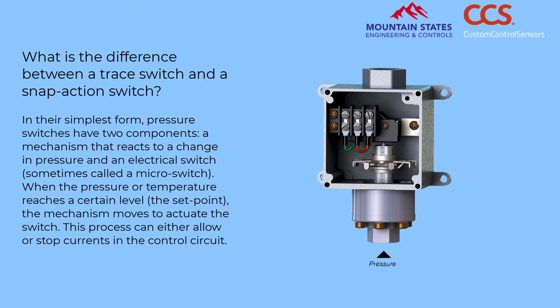What is the difference between a trace switch and a snap action switch? In their simplest form, pressure switches have two components: a mechanism that reacts to a change in pressure and an electrical switch, sometimes called a micro switch. When the pressure or temperature reaches a certain level — the set point — the mechanism moves to actuate the switch, either allowing or stopping currents in the control circuit.